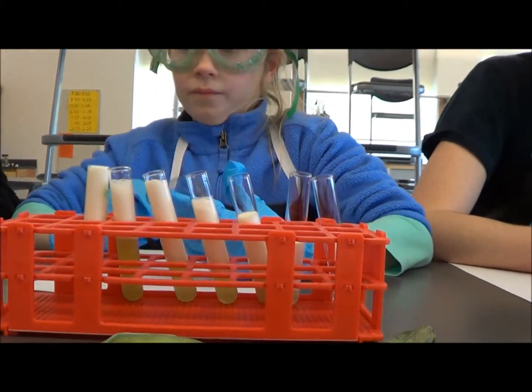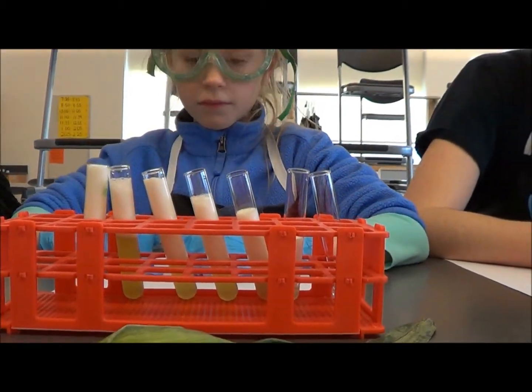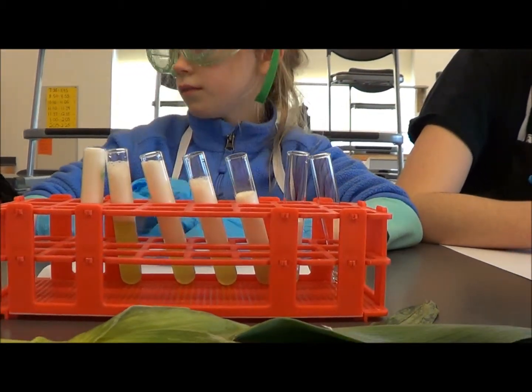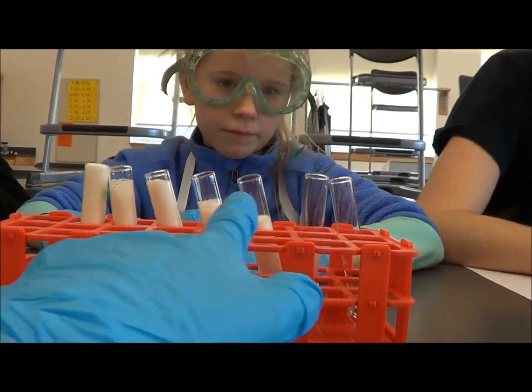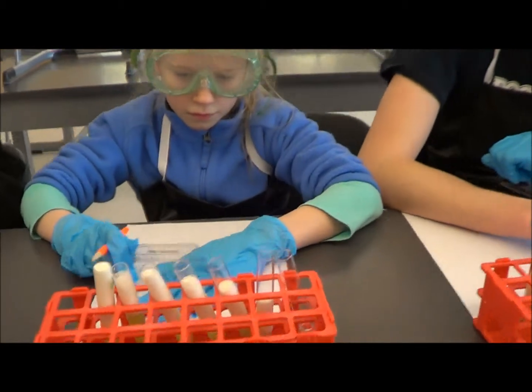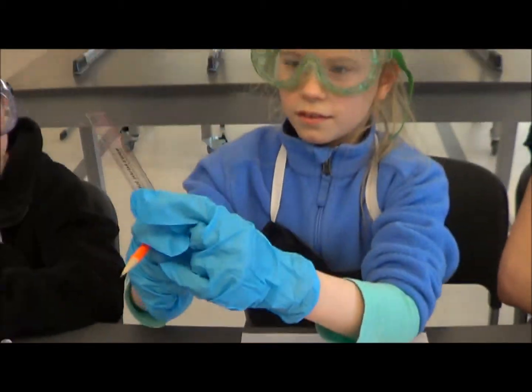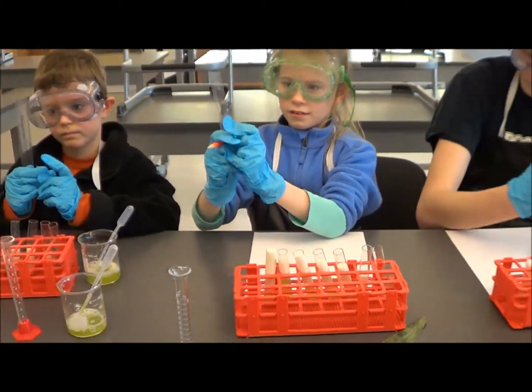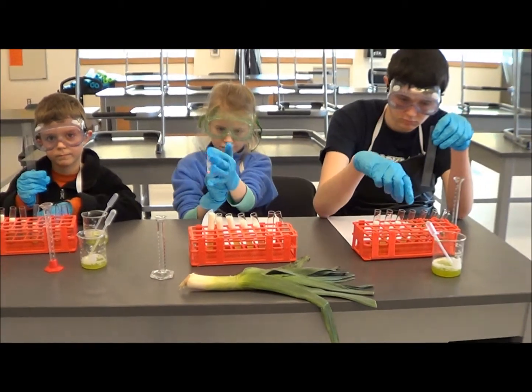What we've done now is put in the enzyme and the hydrogen peroxide, and you can see you get fewer bubbles over here and more bubbles over here. Now each of the students is going to take the ruler and measure in centimeters - all you're going to measure is the bubbles, not the green stuff underneath.